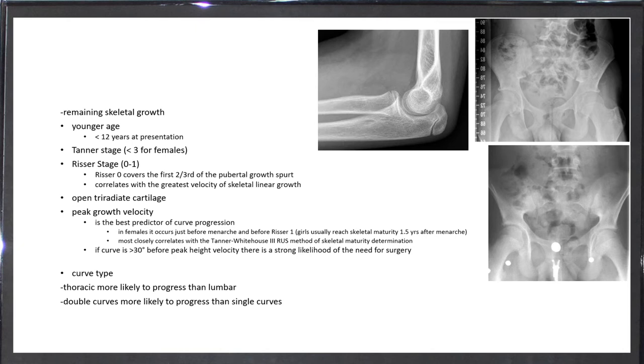Risk factors include remaining skeletal growth. The younger the age, the more signs that there is still more growth to come, like Risser sign and open triradiate cartilage. The peak growth velocity, which is one of the best predictors for curve progression, is for females around menarche. If the curve is more than 30 degrees before peak height velocity, it's more likely to need surgery. Also, the curve type—thoracic is more likely to progress—and double curves are more likely to progress than single curves.